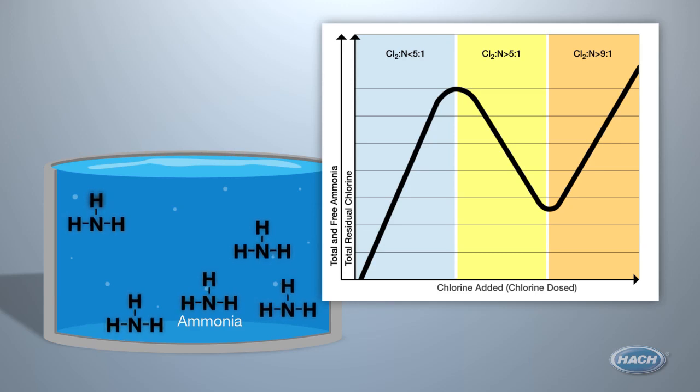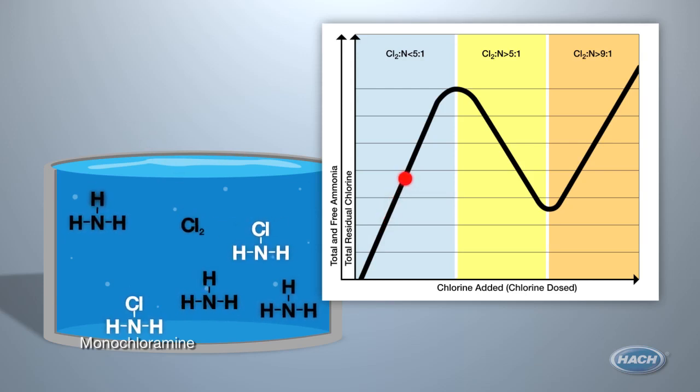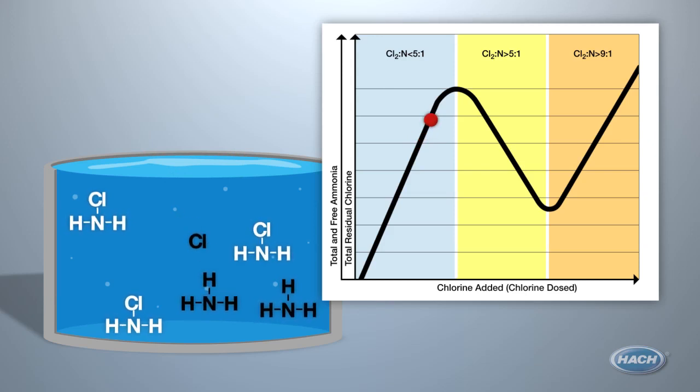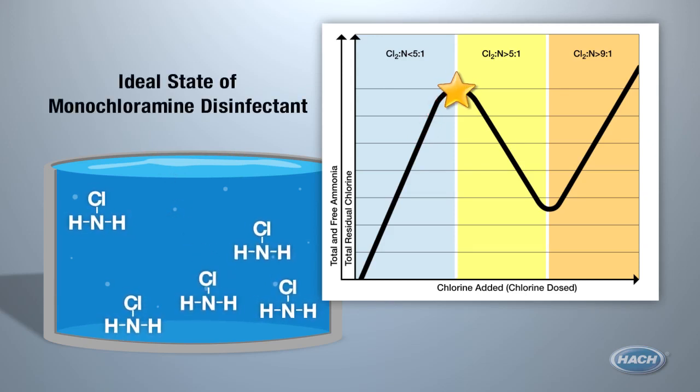You are trying to create monochloramine. The ammonia drops a hydrogen atom and the chlorine takes its place. When you have effectively bonded one chlorine molecule with each ammonia, you have achieved the ideal state of monochloramine disinfectant.